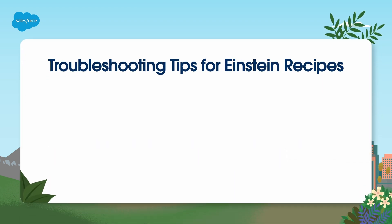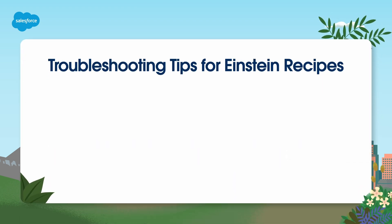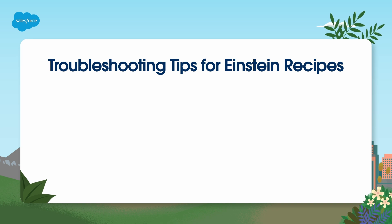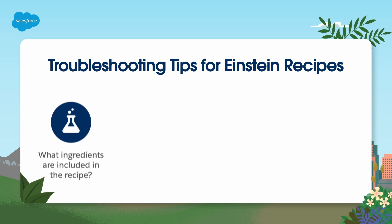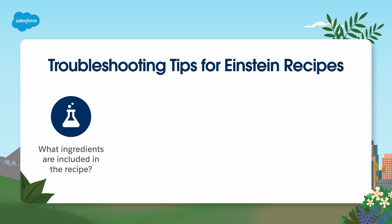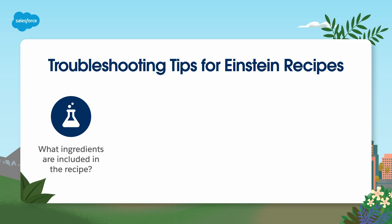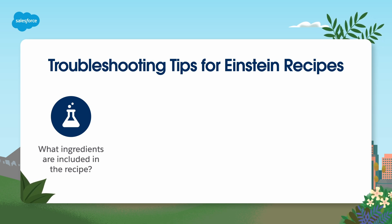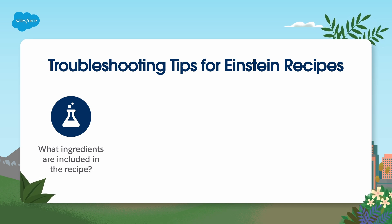Here are some troubleshooting tips for Einstein recipes. Start by examining the recipe's construction. Some key things to check are what ingredients are included in the recipe. If you add an ingredient that requires an on-page anchor item, such as the co-buy ingredient, you must enter a sample item name or ID as the anchor item.